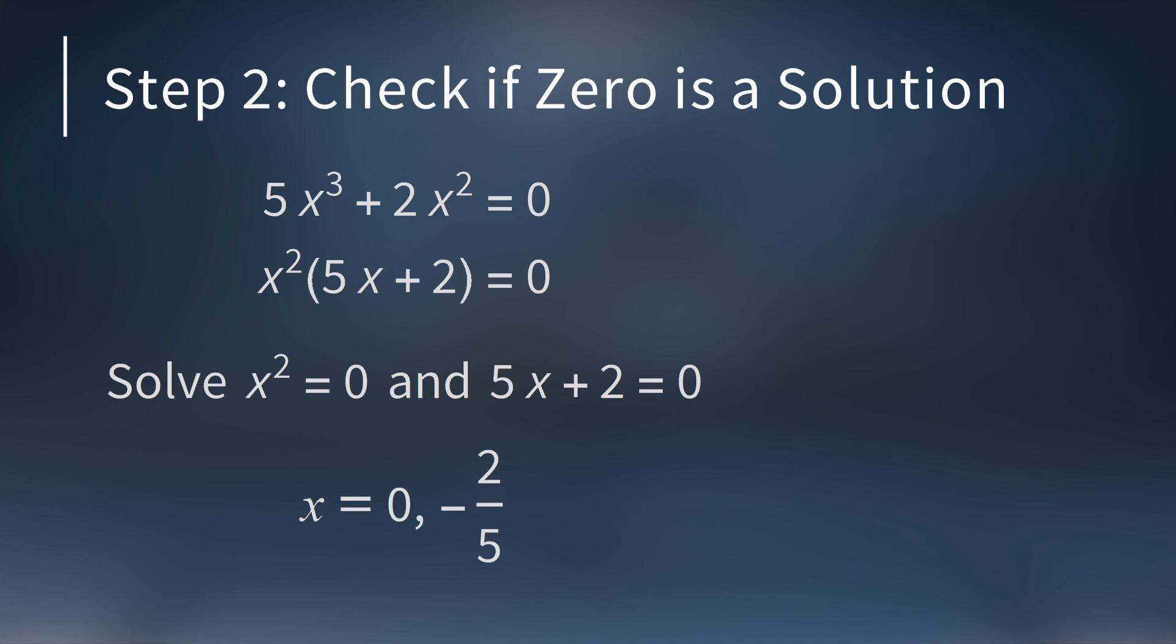Once we do this, we see the solutions are 0 and -2/5. So this Diophantine equation does have an integer solution: 0. Quick note, when solving a Diophantine equation, sometimes you'll want to find all fraction solutions and not just the integer solutions. In that case, we did just find all the rational solutions: 0 and -2/5. But today we're focused on finding the whole number solutions.